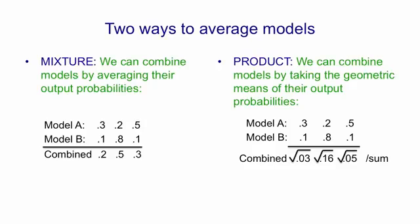You'll notice that in a product, a small probability output by one model has veto power over the other models.